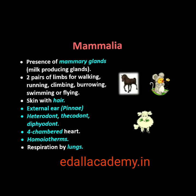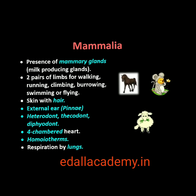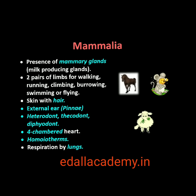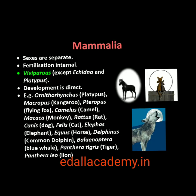Seventh is class Mammalia. They are found in a variety of habitats — polar ice caps, deserts, mountains, forests, grasslands and dark caves. Some of them have adapted to fly or live in water. The most unique mammalian characteristic is the presence of milk-producing glands (mammary glands) by which the young ones are nourished. They have two pairs of limbs adapted for walking, running, climbing, burrowing, swimming or flying. The skin of mammals is unique in possessing hair. External ears or pinnae are present. Different types of teeth are present in the jaw. Heart is four-chambered. They are homoiothermous. Respiration is by lungs. Sexes are separate and fertilization is internal.